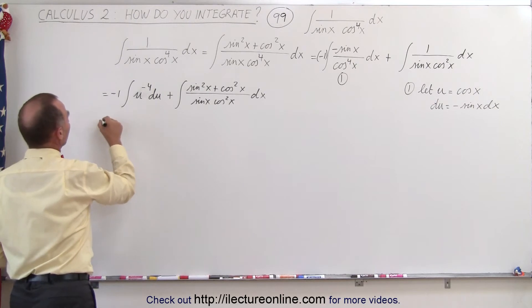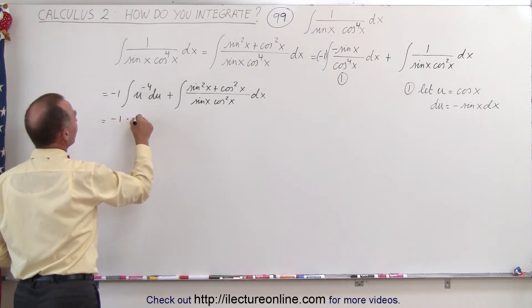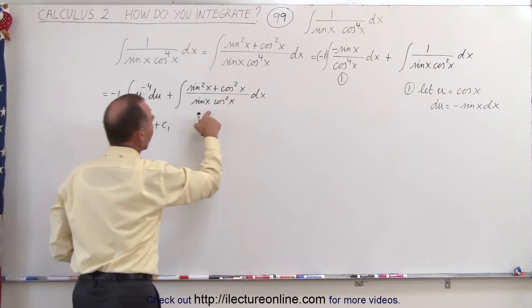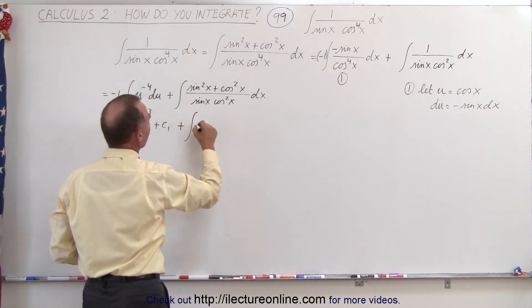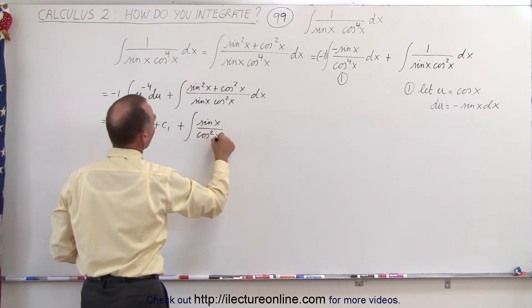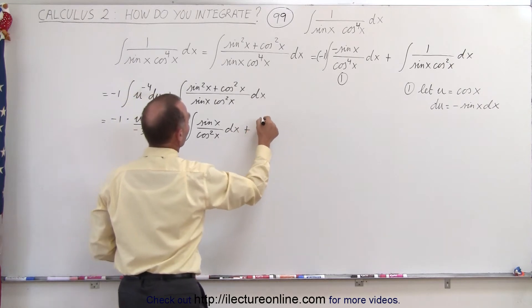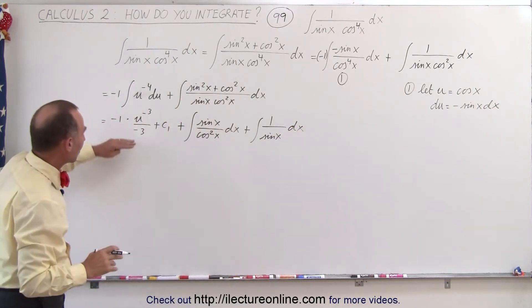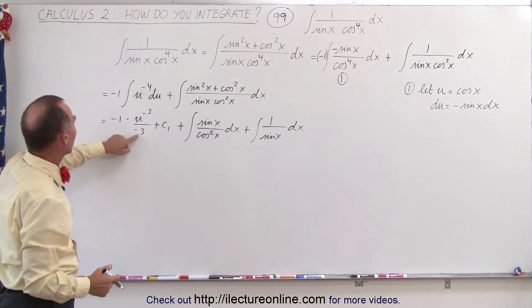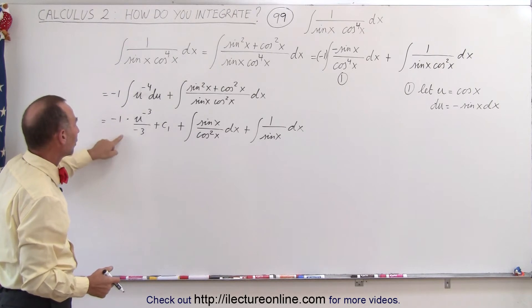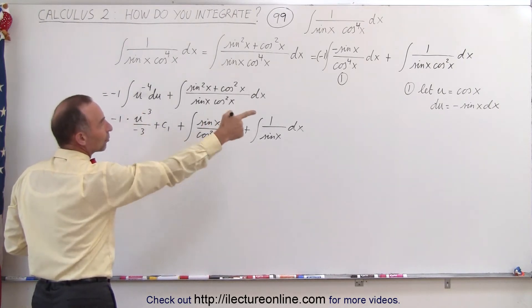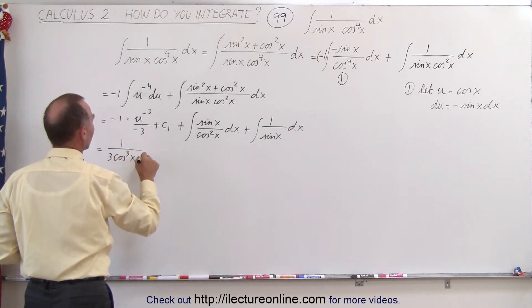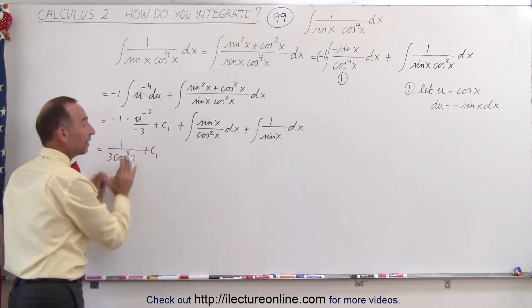For our first integral, this becomes minus one times u to the minus three power divided by minus three plus a constant of integration. The second integral can be separated: this will become the integral of sine of x divided by cosine squared of x dx, plus the integral of one over sine of x dx. Substituting back for u, the negatives give us plus one-third over u cubed, and since u is cosine of x, this becomes one over three times cosine cubed of x plus a constant of integration.